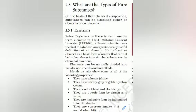Let us move towards pure substances. What are the types of pure substances? On the basis of their chemical composition, substances can be classified either as an element or a compound.